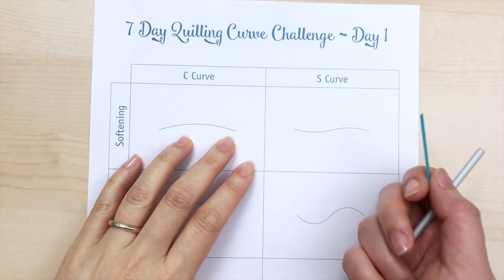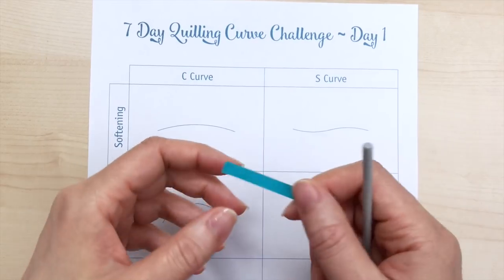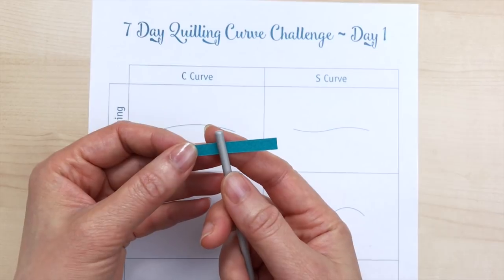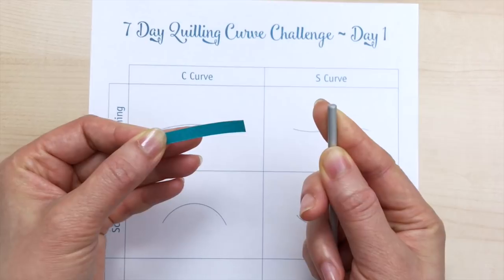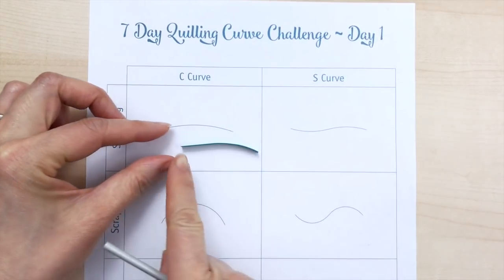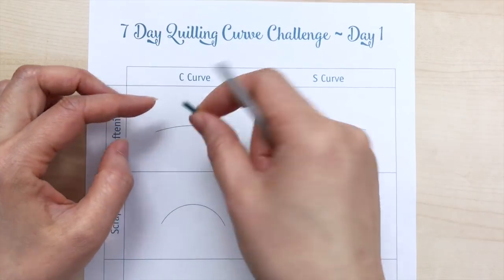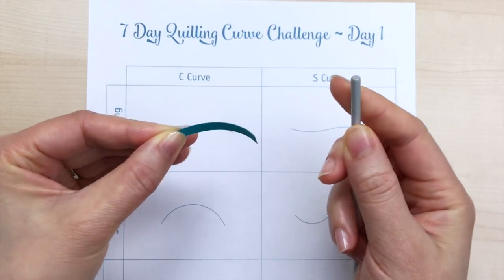Let's start with the first shape. That would be the C curve using the softening technique. Now what do I mean by softening? I'm just going to put the strip of paper between my finger and my tool, and just draw with a bit of friction between those two. And you see what happens is the area where I've held on to it is straight, and there's a bit of curve. So I'm going to turn it around, and do the same thing on the other side.